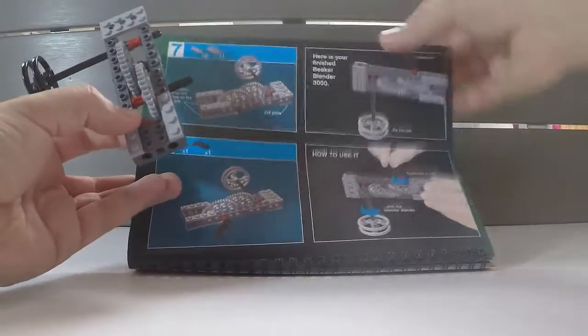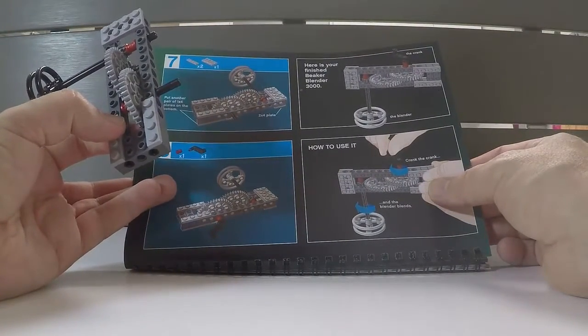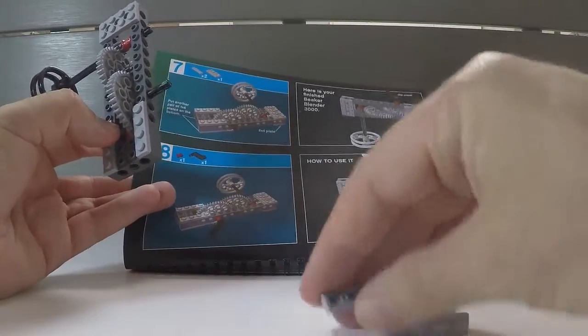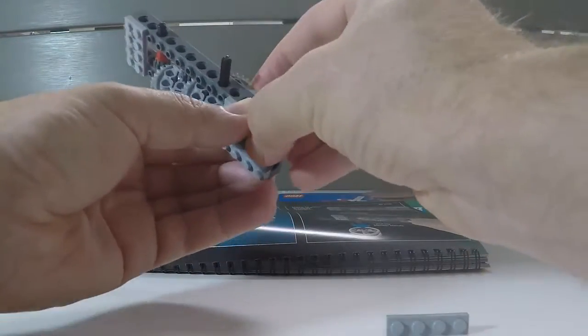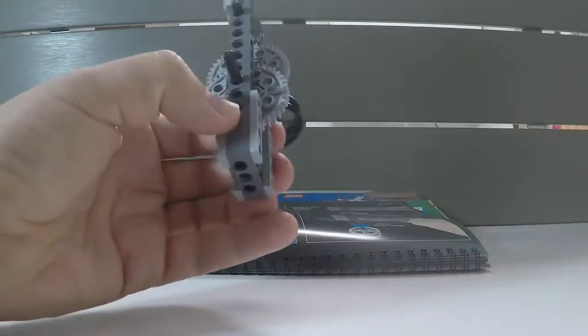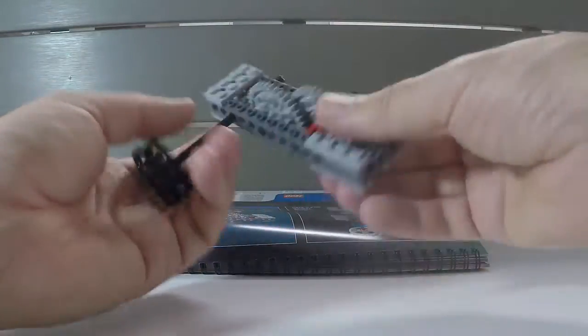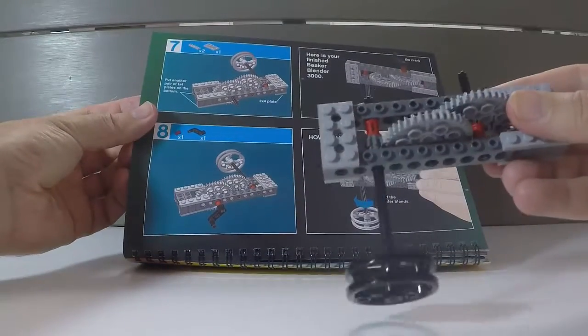So there's a couple more steps. We're going to add another couple of plates on the bottom. Stabilize it. And another 2x4 plate for the top. So as you see, we've only got one more thing to do now, and that's to add a handle.